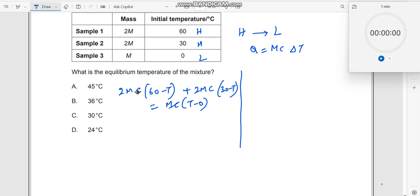So what will happen here? m c, m c, m c goes away. So this should be 2 into 60, 120 minus 2t plus 2 into 30, 60 minus 2t is equal to t. So when I do this, how much will this get? This will be 180 minus 2t minus 2t. That's it.